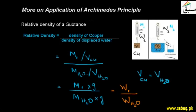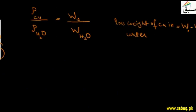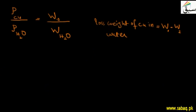Here we have W1 which is 20 N in the air, and W2 is the copper weight in the water. If I subtract W2 from W1, I know that the lost weight is 10 N when it was in the water. This represents the displaced water, which is 10 N. So 10 N plus 10 N gives 20 N. The displaced water weight equals W1 minus W2.